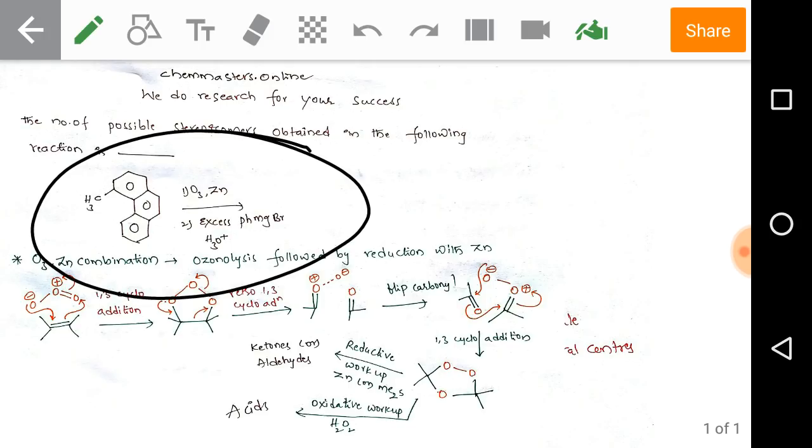Just look at the reaction of phenanthrene, methyl phenanthrene. We can give the name as 4-methyl phenanthrene, reacting with ozone/zinc in the first step. In the second step with excess phenyl magnesium bromide, that is simply a Grignard reagent.